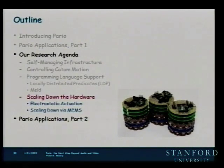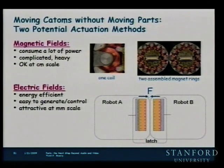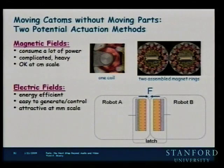Now I'm going to talk about the hardware — and since this is a double-E seminar, let's talk more about hardware. There are two things I'm going to discuss. In these original models, we've been using electromagnets to do the motion. But what we imagine is that when we go down to a millimeter scale, magnets won't be very attractive at that scale — it's hard to manufacture them.